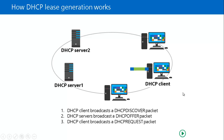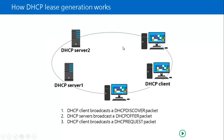In the third step, the client broadcasts a DHCP Request packet. This request includes the reference ID of the server whose offer it is accepting. Since there are two DHCP servers on the network, the client accepts the IP address from whichever server responded first to the DHCP Discover. The client then broadcasts a DHCP Request with that reference ID, effectively requesting: please assign me that IP address.